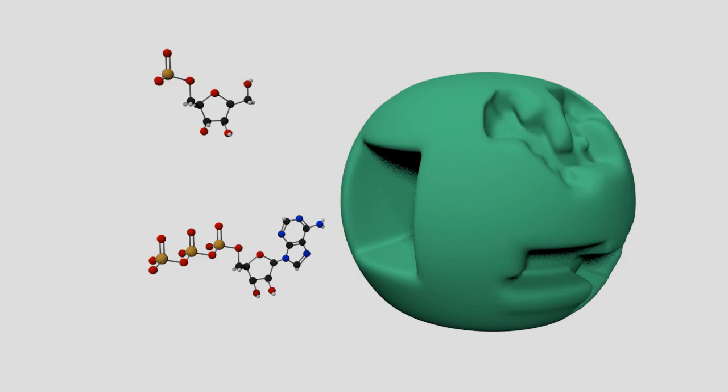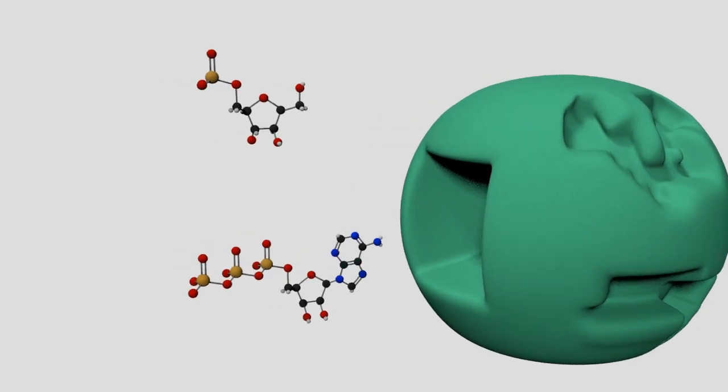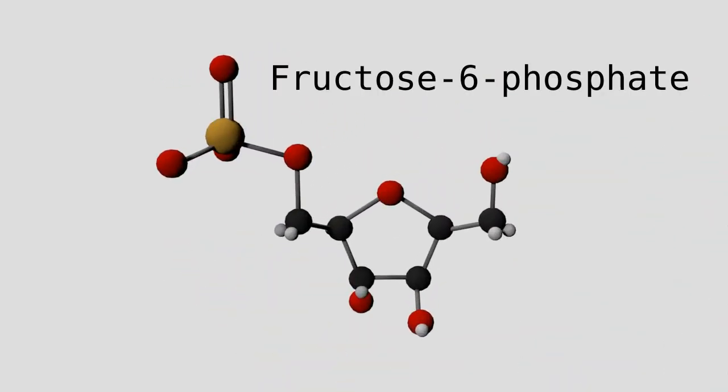Now, let's get to meet the substrates. First, we have fructose-6-phosphate. Fructose is a sugar, and it's a five-membered ring. Then we have a phosphate group attached at the sixth carbon. In this reaction, we want to add a phosphate group to the first carbon.